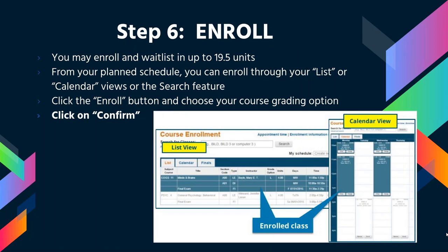Step 6 is to enroll. When your enrollment time is active, you can enroll and/or waitlist in up to 19.5 units. Beginning on the first day of the quarter, this limit goes up to 22 units. You can go back to your planned schedule from the list or calendar view and click Enroll, then select your grading option. Remember to select Confirm or you will not be enrolled. Once enrolled, courses turn blue in the list or calendar view; waitlisted courses appear in light blue.